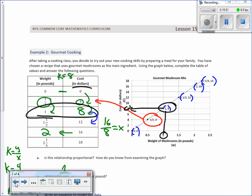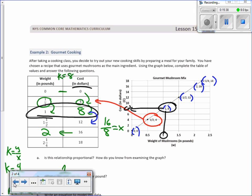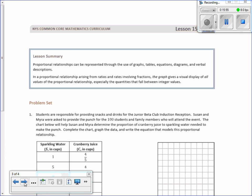That was a quick and I think fairly straightforward Lesson 15, and that is the end. Lesson summary: Proportional relationships can be represented through the use of graphs, tables, equations, diagrams, and verbal descriptions. In a proportional relationship arising from ratios and rates involving fractions, the graph gives us a visual display of all values of the proportional relationship—straight line going through the origin—especially the quantities that fall between integer values. Much easier to graph points on corners of the graph. They are integers—non-fractions. Not always necessary, but it is easier. Alright, you can button your props.